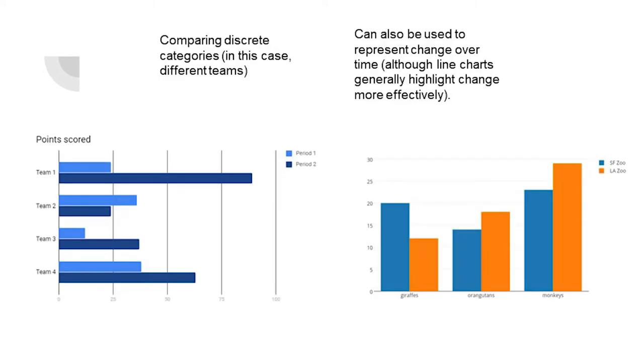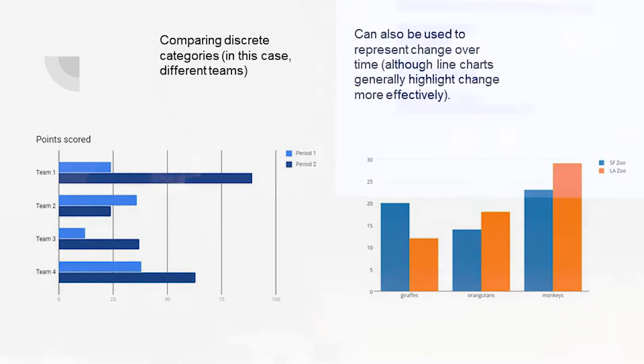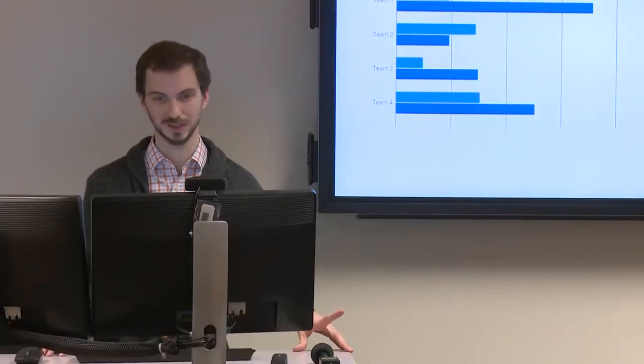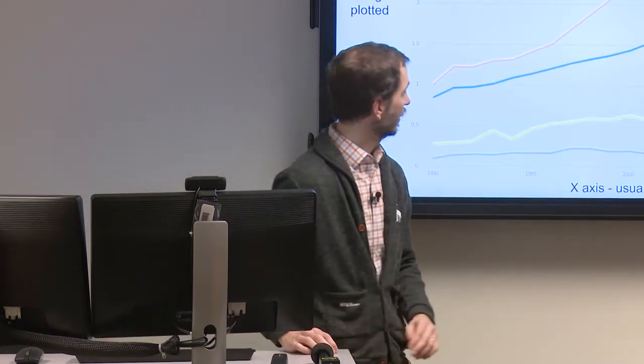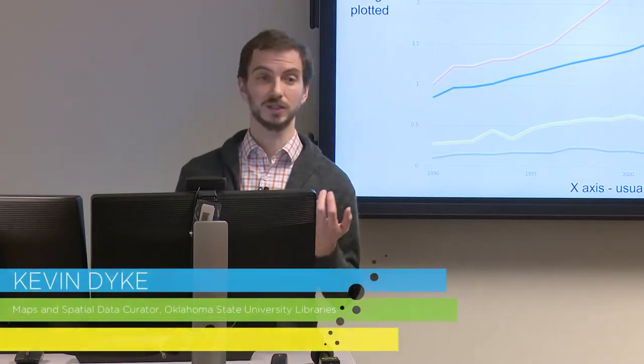Bar charts — we've all seen them. They're very common, and more often than not something common means it's effective. Bar charts are useful for comparing discrete categories. Line charts are useful for plotting continuous data — time, temperature, anything where you'll always have a value. When you're talking about time series, line charts are really the right choice.